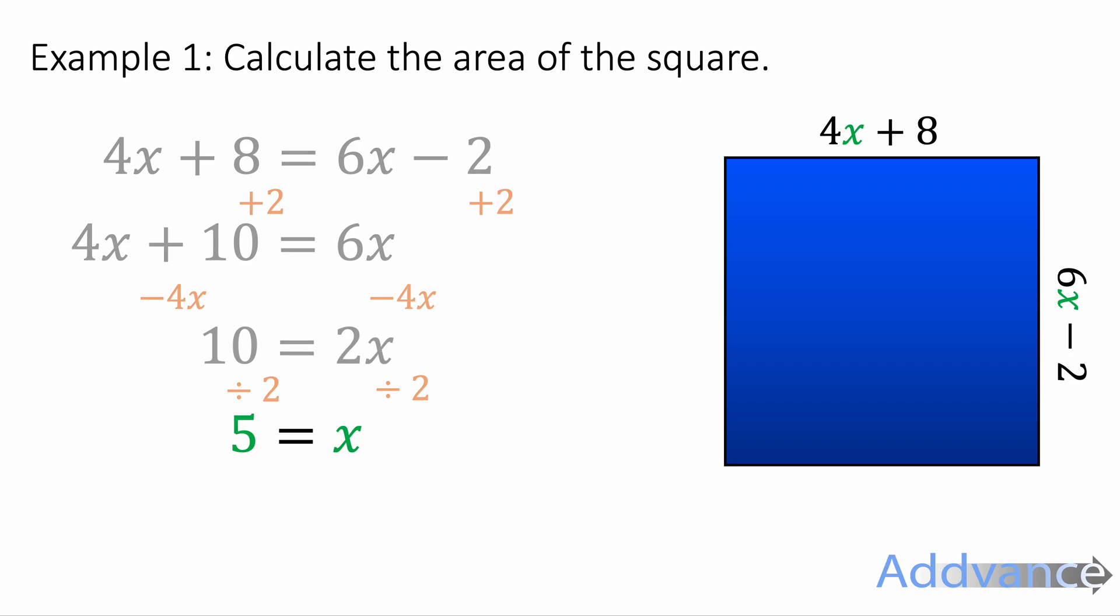We now know that x is equal to 5 and we can put that into the original side lengths. So we substitute that in and we get 4 times 5 plus 8 is equal to 28. And also 6 times 5 minus 2 is also 28. This confirms that we've got the right x because both sides are indeed equal to each other.